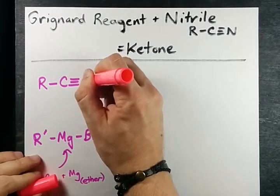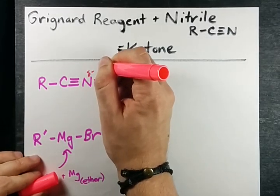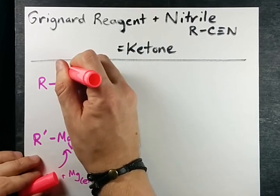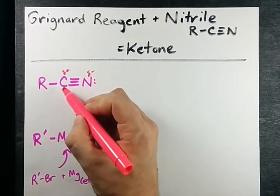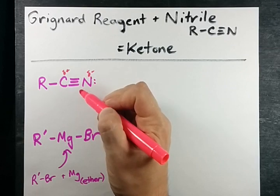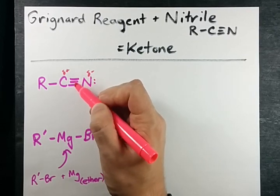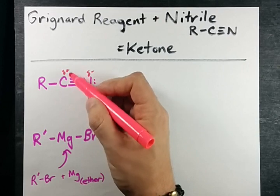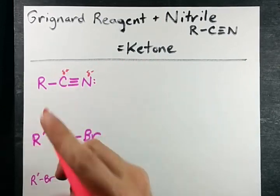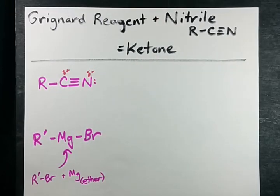But here is my electronegative nitrogen and my relatively delta plus carbon. After all the electronegative atom is hungrier for these electrons, leaving the carbon a little bit deficient. Delta plus. Oh delta plus,